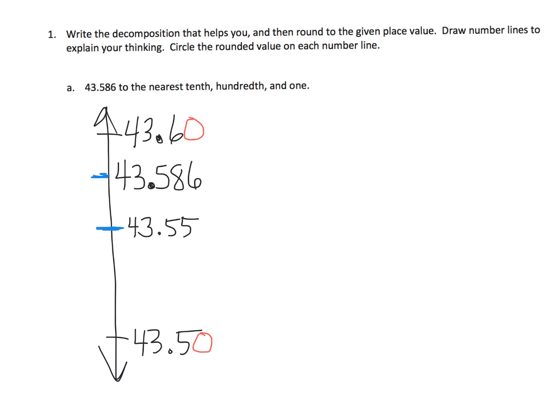And we can label it right here. And it says to circle the rounded value, and that means 43.586 rounded to the nearest tenth is 43 and six tenths right here. We don't need that last zero, so it's 43.6.